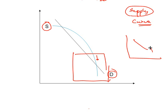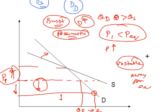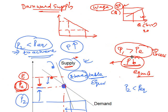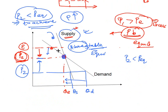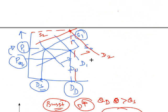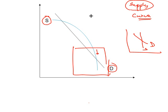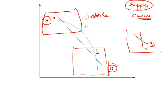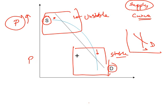Whenever the supply cuts the demand from above, you have stable equilibrium. When the supply cuts from below, you have unstable equilibrium. So in natural processes — like gold prices — you can have stable equilibrium at lower prices and unstable equilibrium at higher prices, both present within the same curved supply scenario.